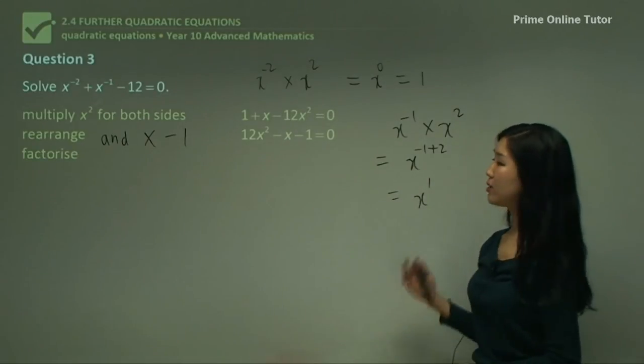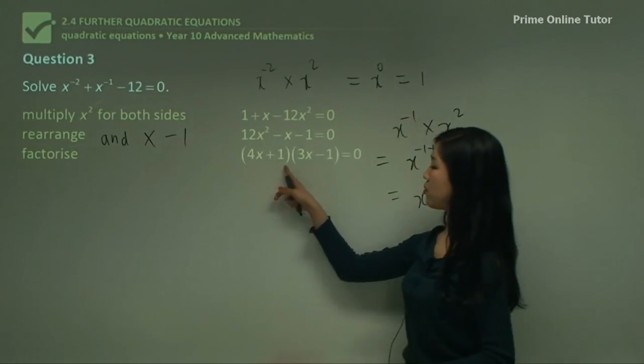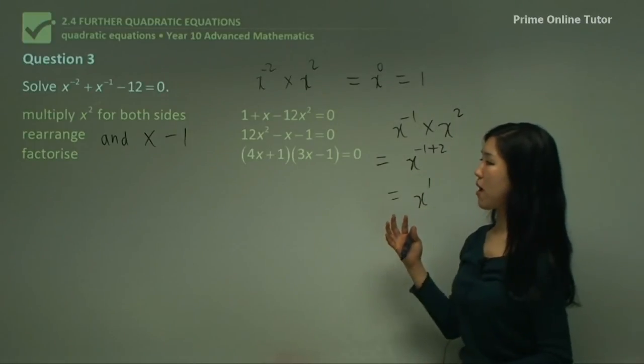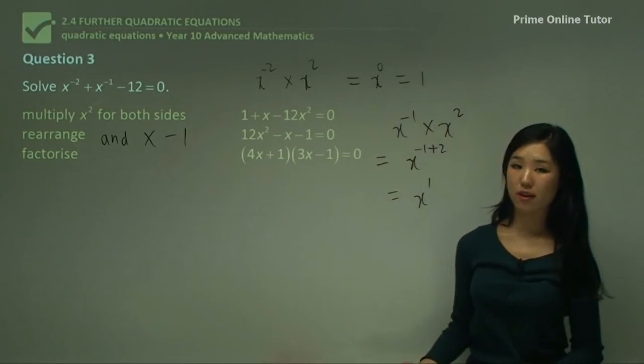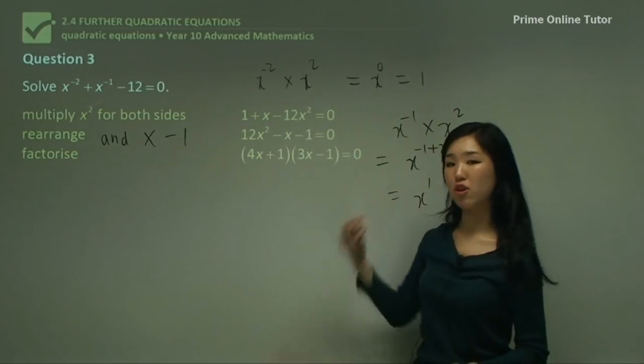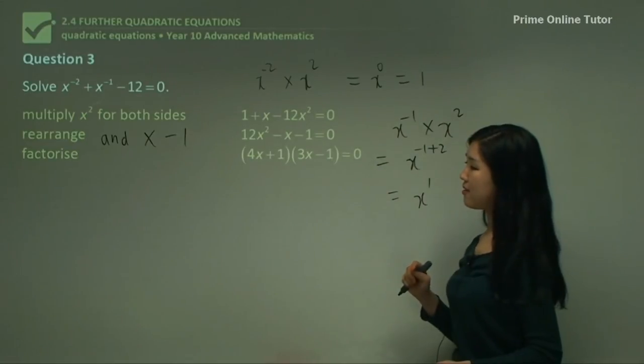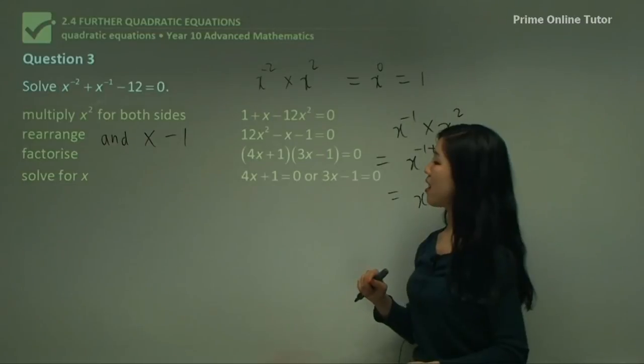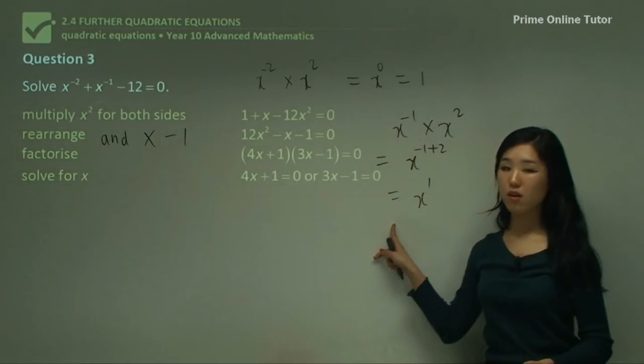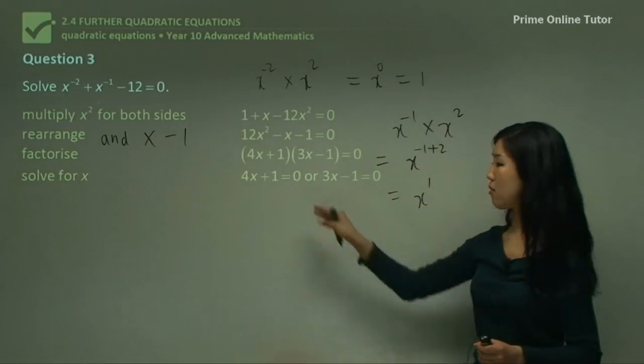Now factorize it. I would suggest you to use the cross method, and you should get (4x + 1)(3x - 1) = 0. Guys, I'm showing you the answer straight away, but make sure you know how to do it. Make sure you're not just following and assuming that's correct. Make sure you know how to do that by yourself. So I factorized it.